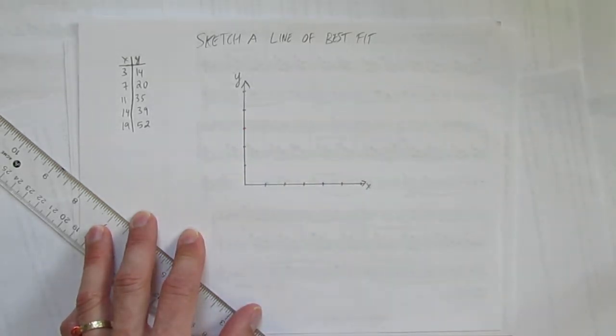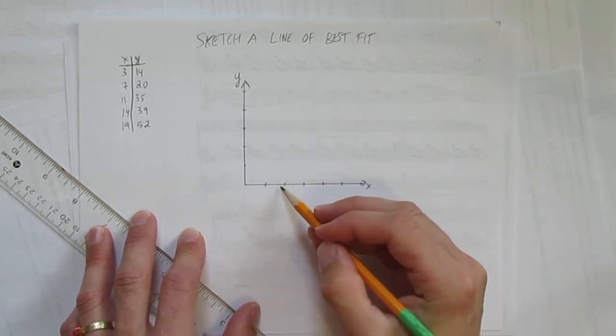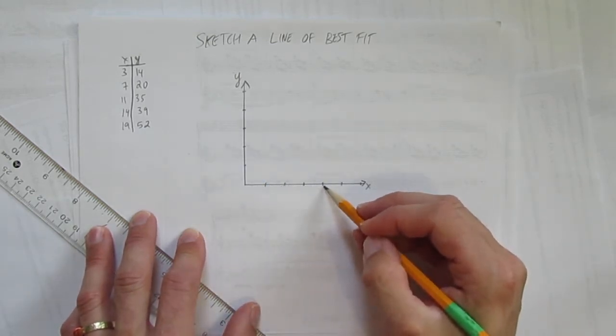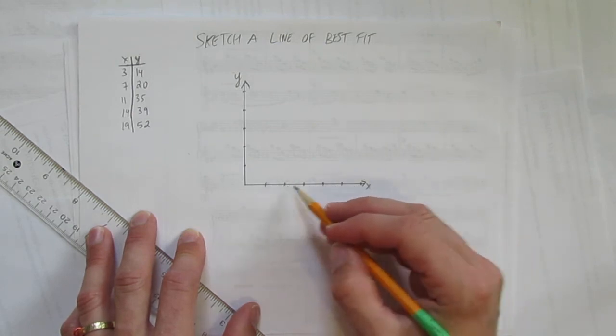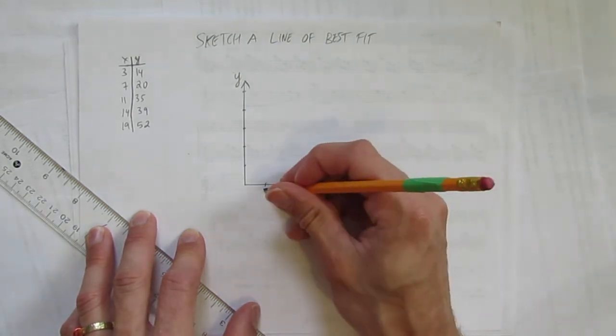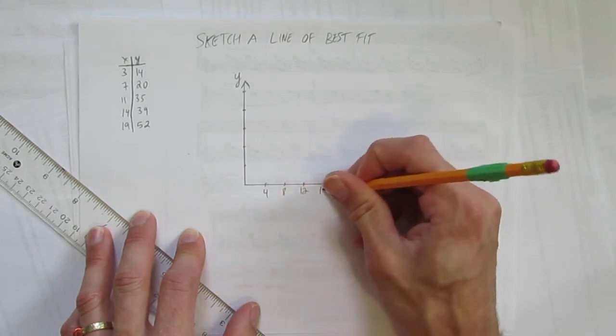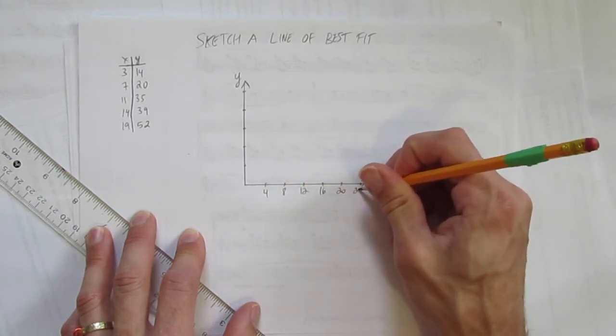I need to go from 0 to 20, so let's see, 5, 10, 15, 20, not bad, but I could use these ticks if I go by 4, I think, 4, 8, 12, 16, 20. So let's go like that, 4, 8, 12, 16, 20, and this will be 24.